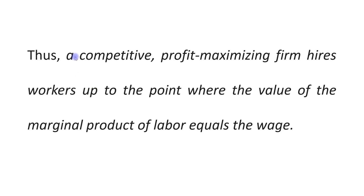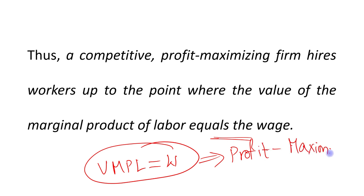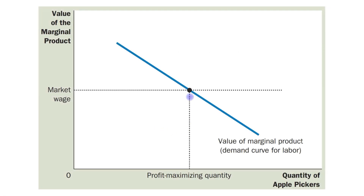So we can say: a competitive profit-maximizing firm hires workers up to the point where the value of the marginal product of labor equals the wage. This condition — VMP = W — is the profit-maximizing condition. The intersection point at which VMP equals the wage rate gives the profit-maximizing quantity of labor.